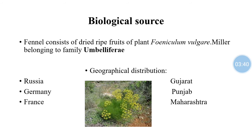Geographical distribution includes the habitat or source from which the drug is obtained commercially. Fennel is cultivated commercially in Russia, Germany, and France. In India it is cultivated in Gujarat, Punjab, and Maharashtra.